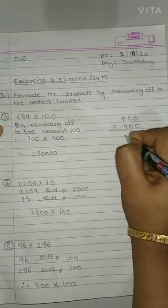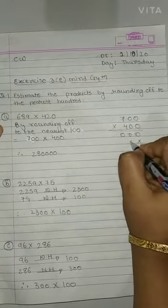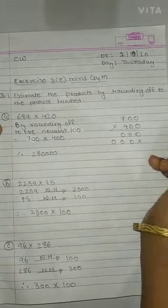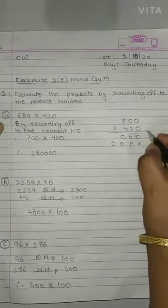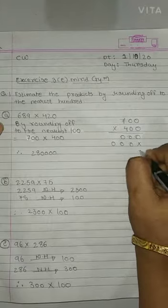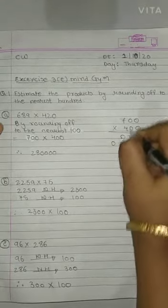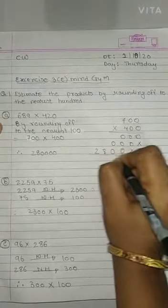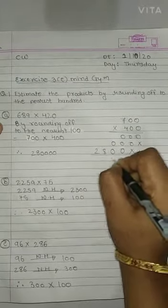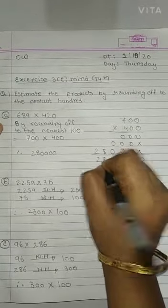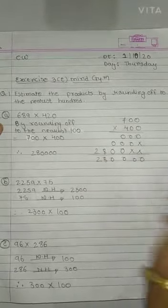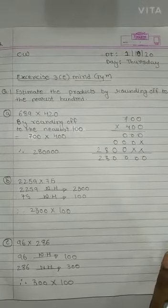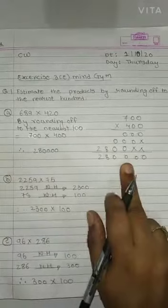700 multiplied by 400. 0, 0, 0. If we want it, we can solve it. Understood? So here we get answer 280,000. Understood? You can do this directly or do this. Then question number B.